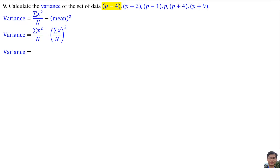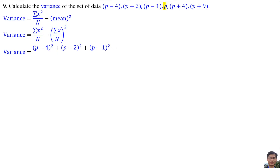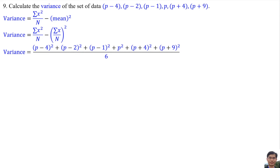So we compute: (P minus 4) squared, plus (P minus 2) squared, plus (P minus 1) squared, plus P squared, plus (P plus 4) squared, plus (P plus 9) squared. The total number of data is 6. Minus the mean squared — the mean is the summation of all these numbers.